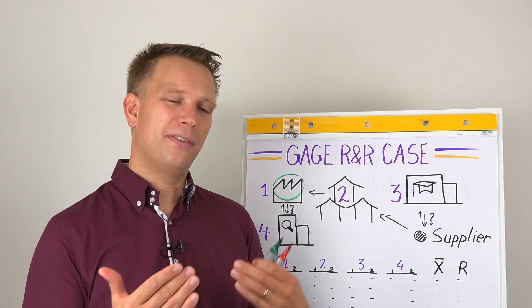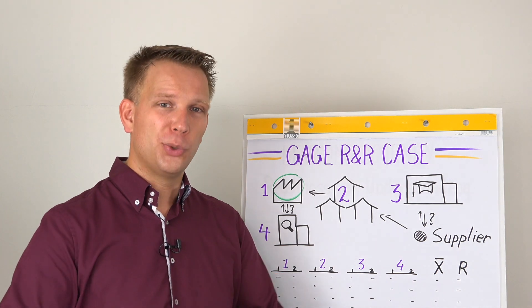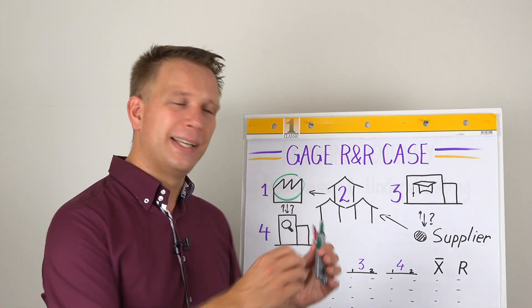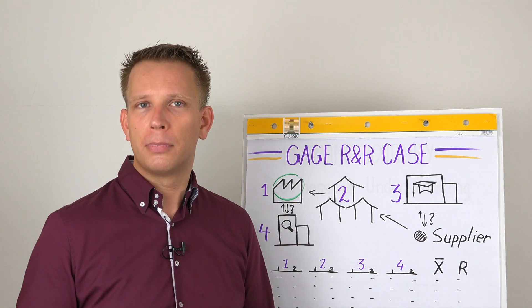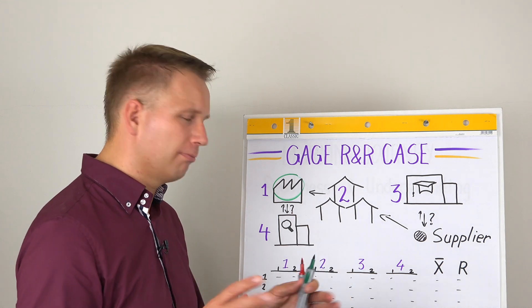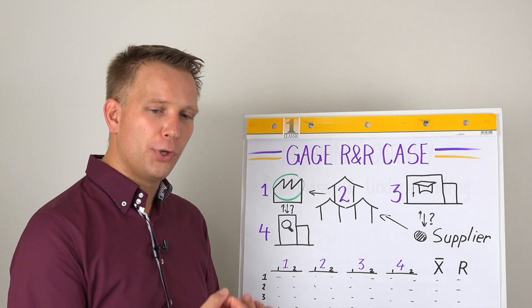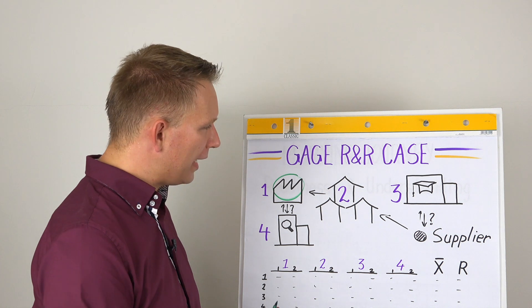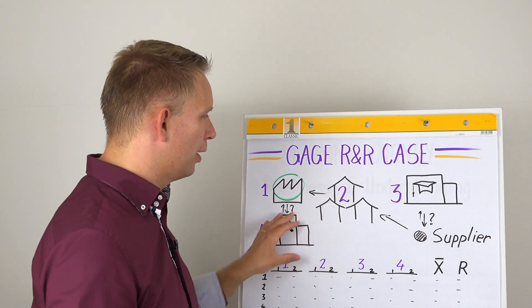that we knew have a bit different contents in the milk, because always with a Gauge R&R you would like to have the whole spread of your process. That makes that you can compare the variation in the analysis with the variation in the actual product that you are getting in. So we took a number of supplier farms that we knew had a difference between what they would give us, and from each of those tankers of milk coming in we took samples and we made sure that we had enough samples to supply all of these laboratories.